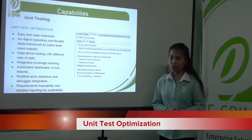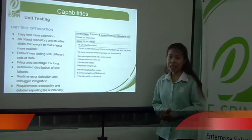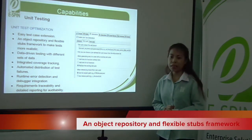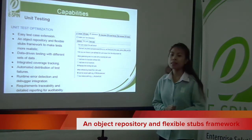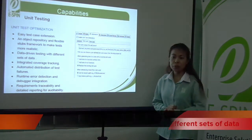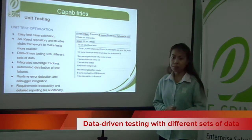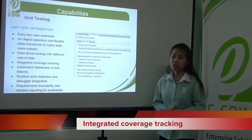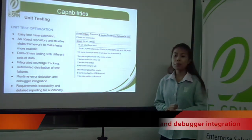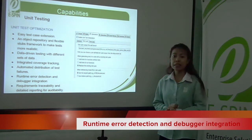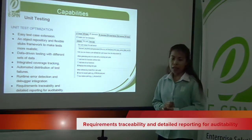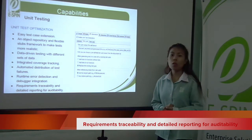Unit test optimization includes easy test case extension, an object repository, and a flexible stubs framework to make tests more realistic. Additional features include data-driven testing with different sets of data, integrated coverage tracking, automated distribution of test failures, runtime error detection and recovery integration, and requirements traceability with detailed reporting for auditability.